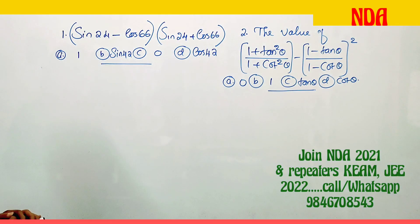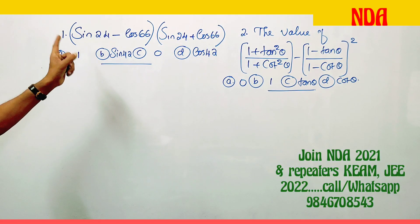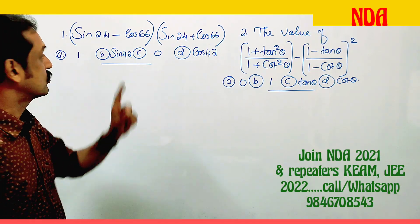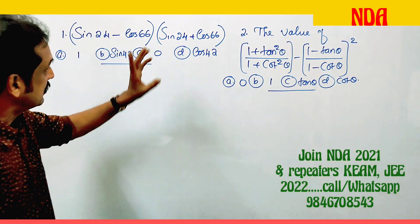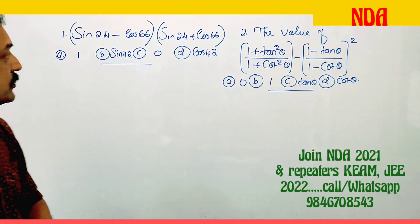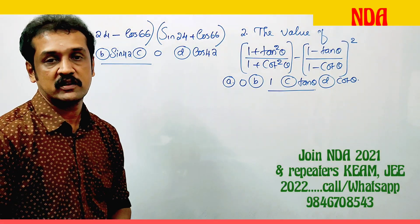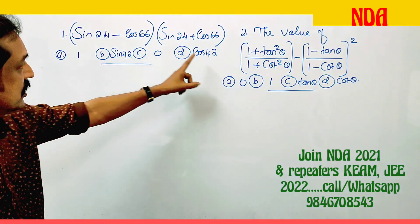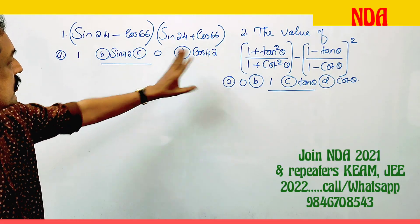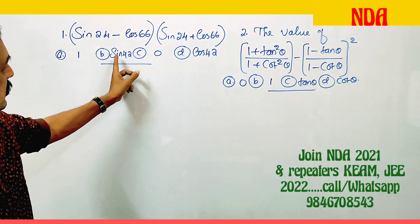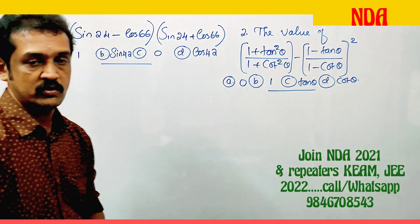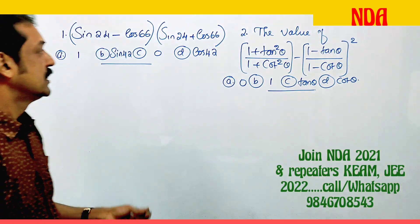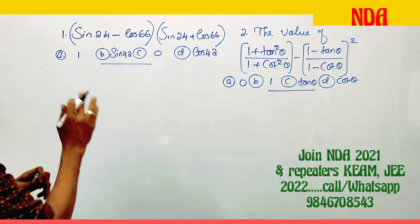Two questions are trigonometry. Question 1: find the value of sin 24 minus cos 66 into sin 24 plus cos 66. The answer involves cos 42 and sin 42. Let's start.